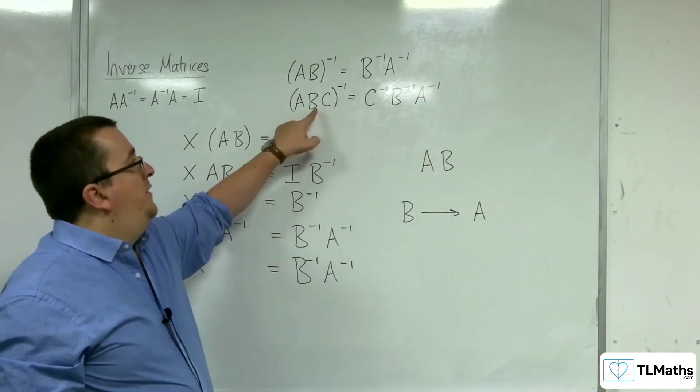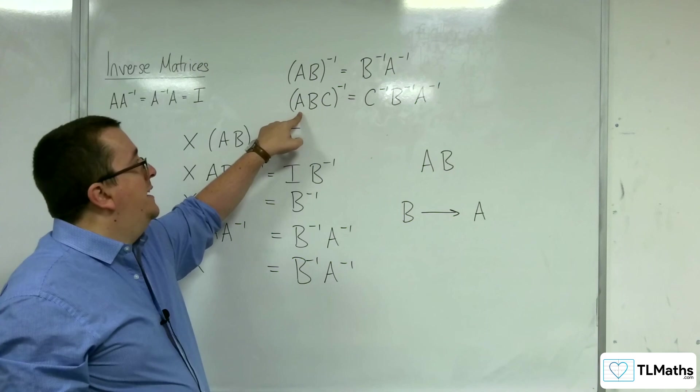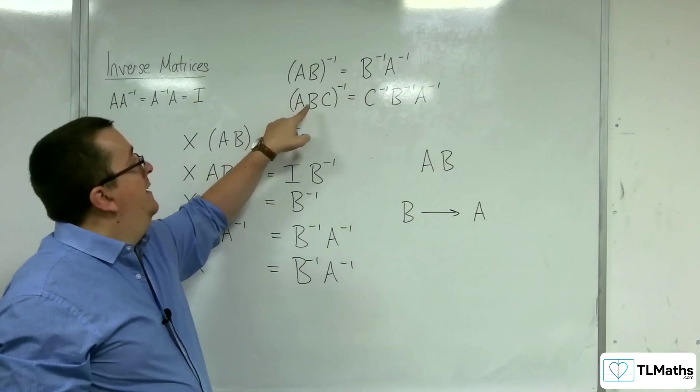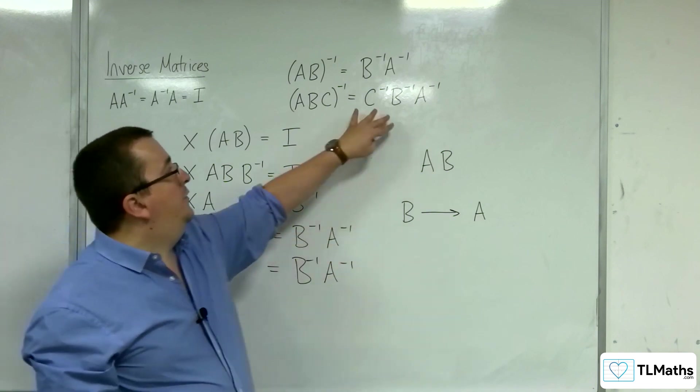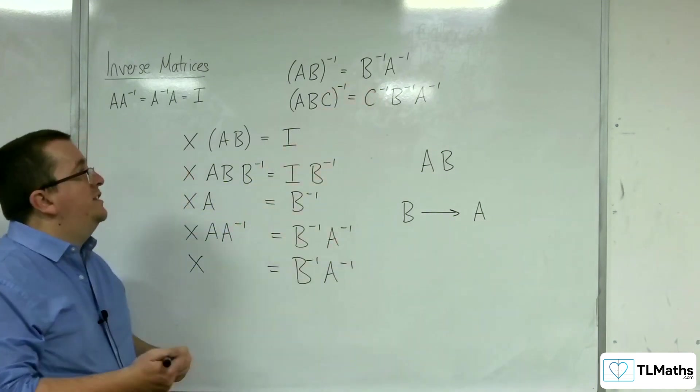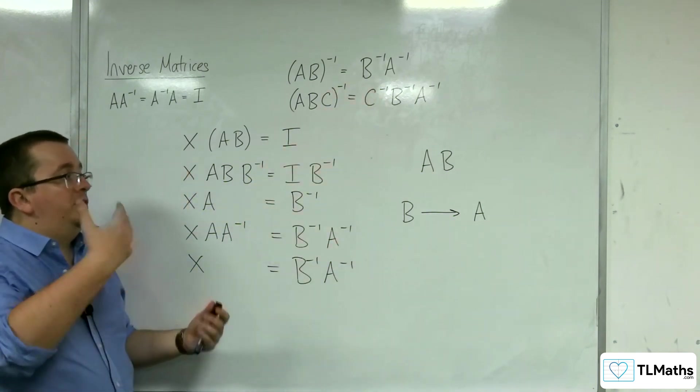You've done C first, then B, then A. To untangle it, you've got to untangle A, untangle B, then untangle C. And that's why that could be an extension going on to a product of three matrices.